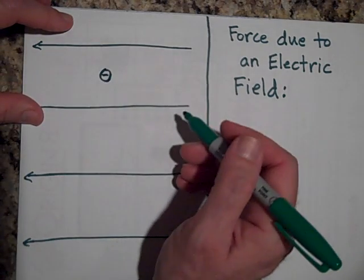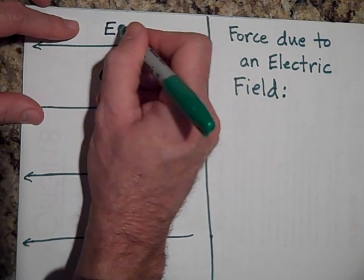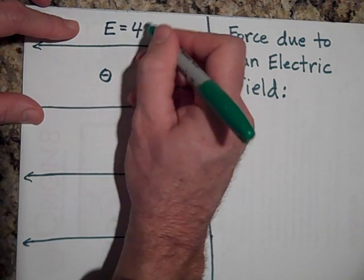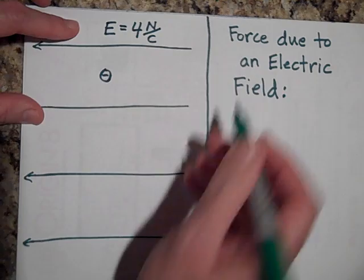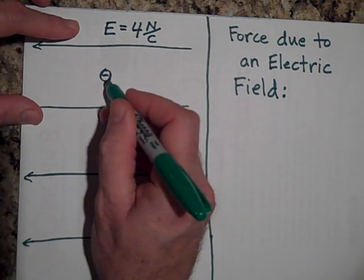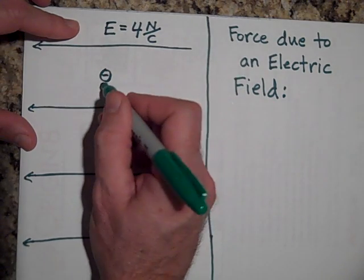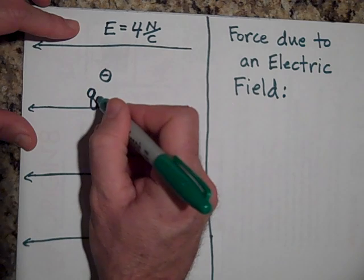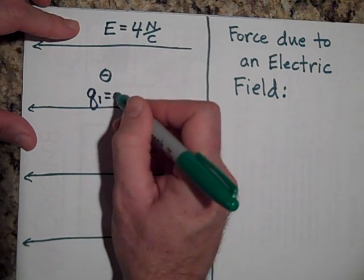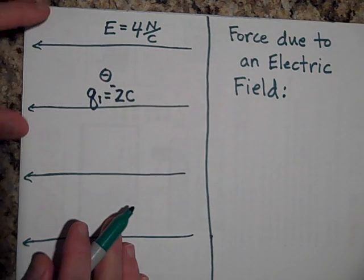Let's make up a field. Let's say this field is 4 newtons per coulomb. And I'm gonna drop a 2 coulomb charge here, which is incredibly huge, but we'll just make the numbers easy. So this charge right here that I'm putting in here, Q1, it's 2 coulombs and it's negative.